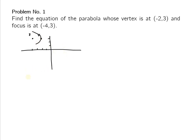Since it opens to the left, it is in the form (y - k)² = -4p(x - h). We need to find the value of p, which is the distance from the vertex to the focus. Counting from the vertex, or subtracting: -2 minus -4 gives positive 2, so p equals 2. Our vertex is at (-2, 3), so h = -2 and k = 3.